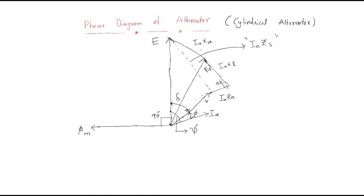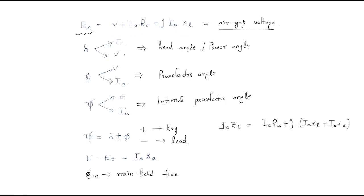So this is the phasor diagram of the alternator — a very important concept. We learned new things: one is the load angle, another is psi the internal power factor angle. The drop between the open circuit voltage and the air gap voltage Er is the armature reaction drop ia·Xa. I hope all of you understand the session, thank you.